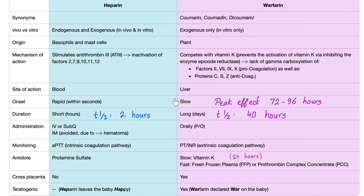Warfarin's onset is slow. Peak effects occur at three to four days — so in an emergency or ICU setting, use heparin instead. The half-life is 40 hours. Administration is oral, and the bioavailability of warfarin is about 100%, which is unusual for an oral drug — intravenous drugs typically have 100% bioavailability.